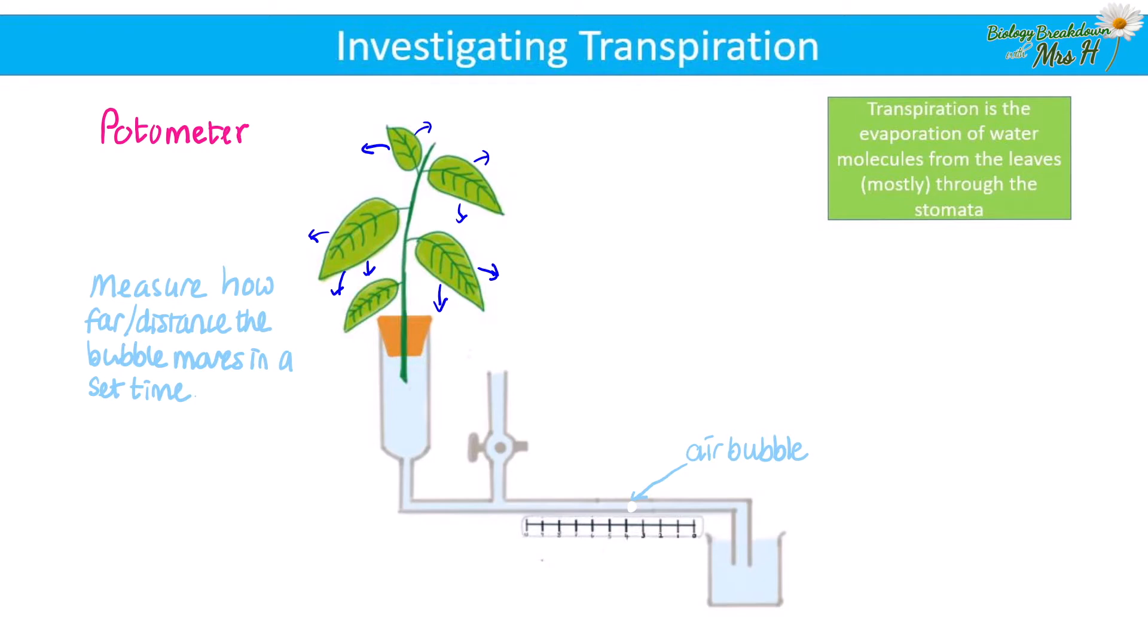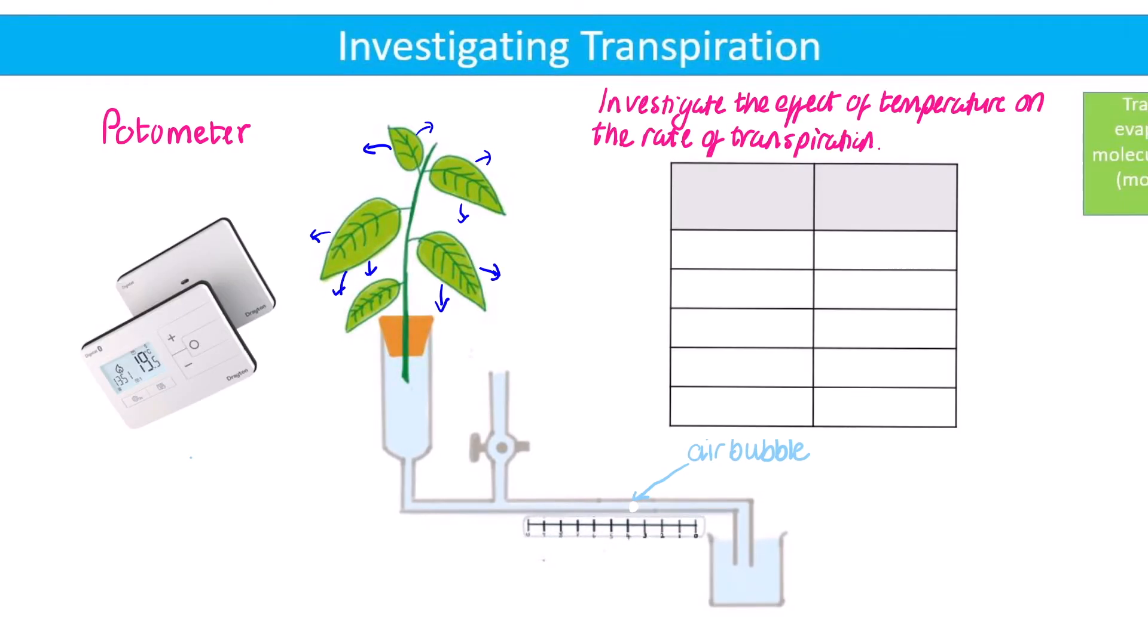We can use this potometer to investigate the factors that affect the rate of transpiration and make them our independent variables, such as temperature. In our experiment design, our independent variable needs to have at least five different values, so five different temperatures. Then measure the distance moved at each temperature. The further the bubble moves, the higher the rate of transpiration. In between each temperature we will need to reset the bubble to zero, and we can do this by opening the tap of the reservoir which will allow a small volume of water into the capillary tube which will push the bubble back, then close the tap.